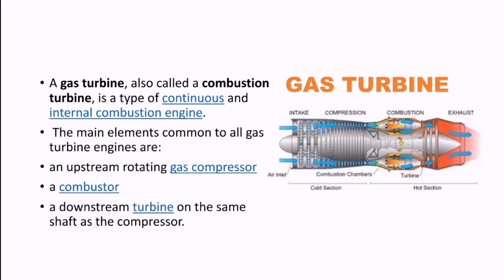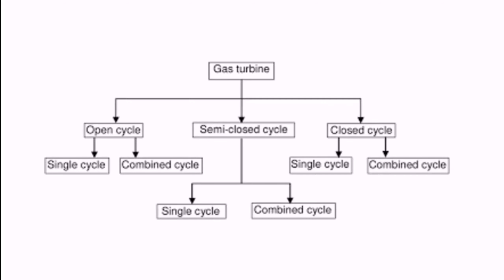Gas turbines are classified into three different kinds: open cycle, semi-closed cycle, and closed cycle. Each of these can be further classified into single cycle or combined cycle.